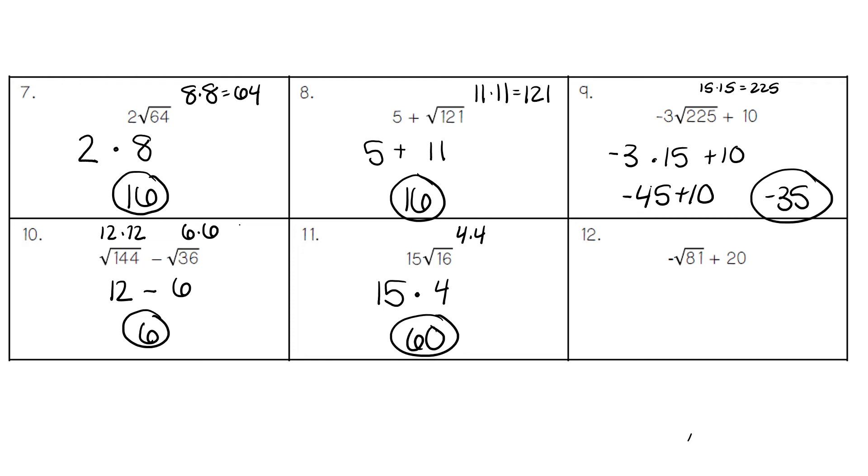The last problem is number 12, where we have the negative square root of 81. We keep the negative sign, and the square root of 81 is 9. We keep the plus 20 at the back. Negative 9 plus 20 gives us an answer of 11.